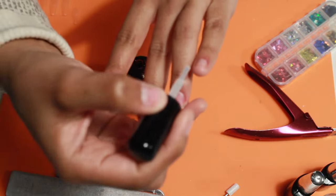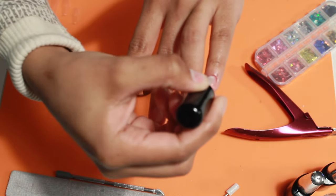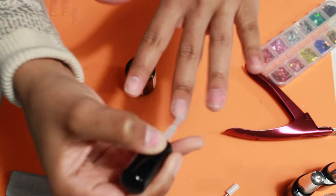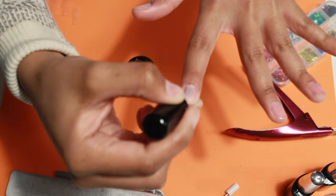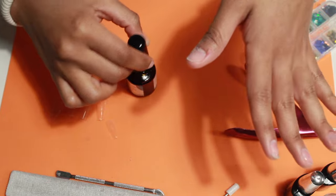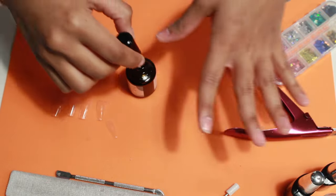If you notice that your sets are either popping off or not lasting as long, I would recommend trying dehydrator and primer. I've noticed a big difference when I started using it, so if that's something that you are struggling with, definitely try that out.